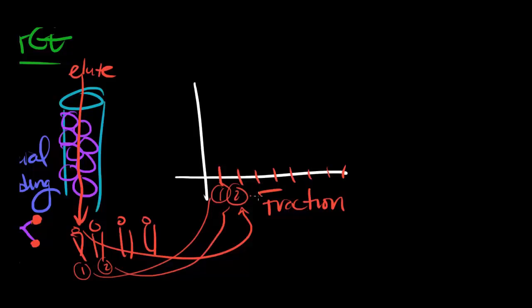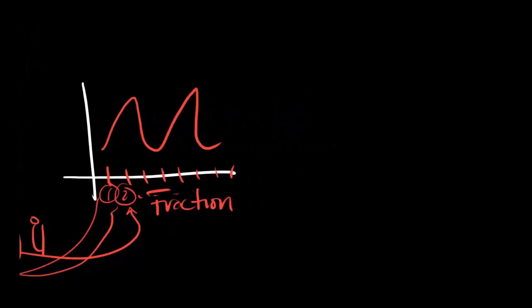You'll do this until all the proteins have come out. I didn't draw on the graph, but usually the salt concentration is also shown to tell you how the concentration increased. Proteins bound to beads require a higher concentration of salt to get them to fall off. By the time you get to later fractions, the concentration is much higher than the concentration you started with. Through this process, you'll have different peaks signifying different groups of proteins.